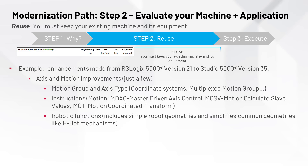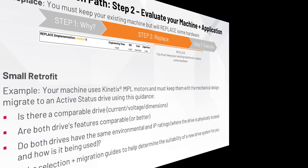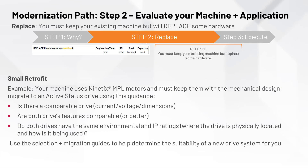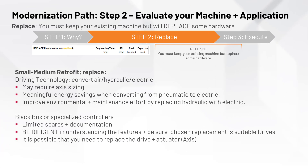Step 2 — Replace. This step is where some hardware is changed; the implementation widget shows this as medium. Let's say you're replacing your Kinetics servo drives — reusing motors with new drives can also mean migrating your communication layer to a flat EtherNet/IP network. That can open new opportunities to leverage new features that may not be available with your existing architecture.